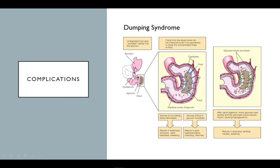The increased concentration causes fluid from the circulating bloodstream to shift into the small intestine. With less fluid in the bloodstream, pressure falls, causing weakness, dizziness, rapid heartbeat, and sweating. In addition, the large influx of fluid into the gut causes hyperperistalsis, resulting in pain, cramping, and diarrhea. When all of the carbohydrates dumped into the small intestine are absorbed into the bloodstream, blood sugars rise. The pancreas then responds by dumping insulin to lower those large amounts of glucose. Because everything from the stomach dumped into the small intestine to be absorbed, there is nothing left to bring blood sugars back up, leaving the person feeling dizzy, faint, and nauseated.